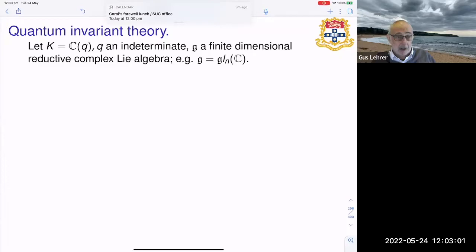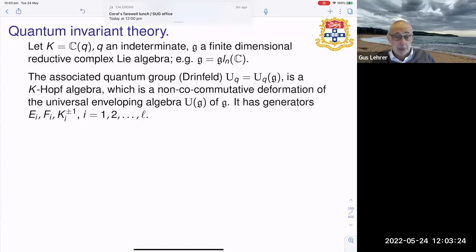And we let k be the field of rational functions in an indeterminate q, and we take g to be a finite dimensional reductive complex Lie algebra, for example gl_m. The associated quantum group, and I'm not going to give a lot of detail about this, obviously don't have time, it has generators e_i, f_i and k_i to the plus or minus one where i runs from one up to l and l is the rank of g.